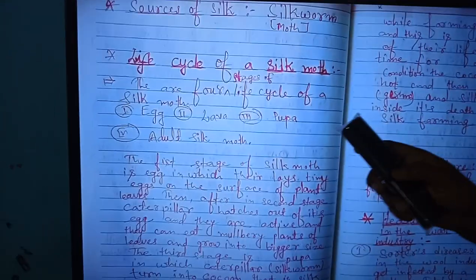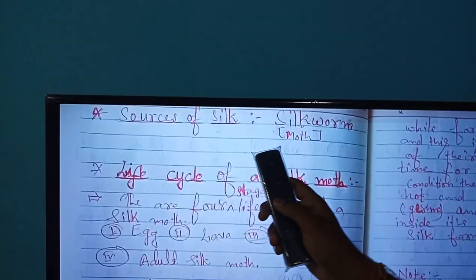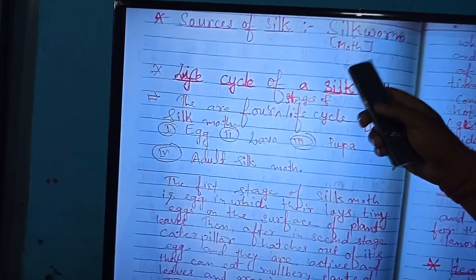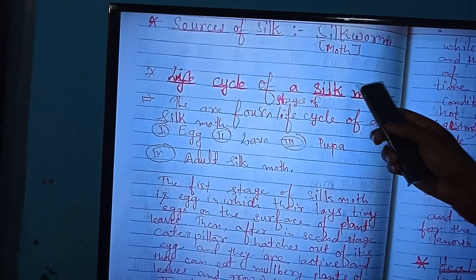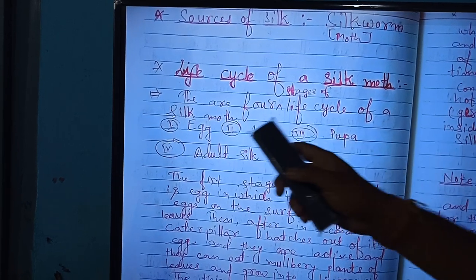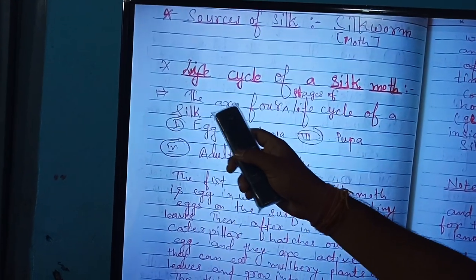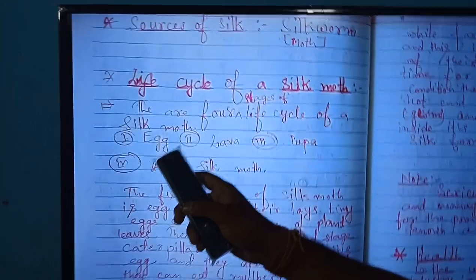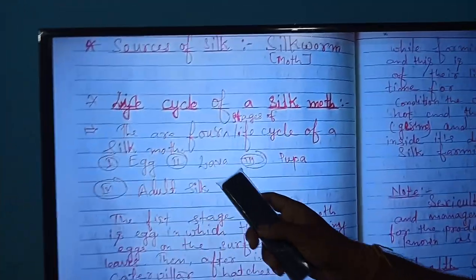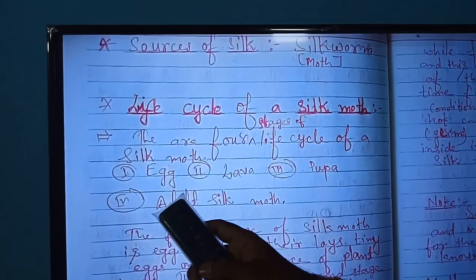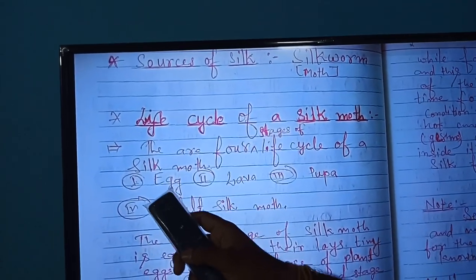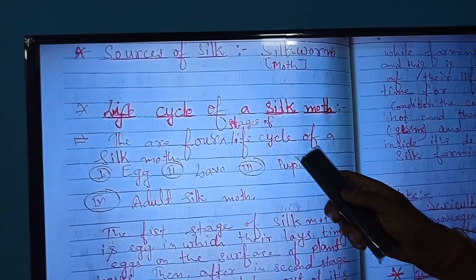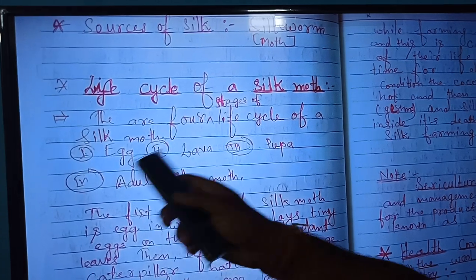Let us now talk about the sources of silk. Actually, the main source of silk is the silk moth — meaning the female silkworm. Their life cycle is important to study because we get silk thread and yarn from their lives. There are four life stages in the silk moth's cycle.